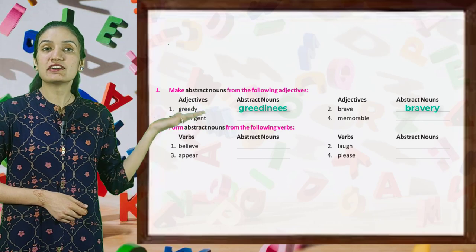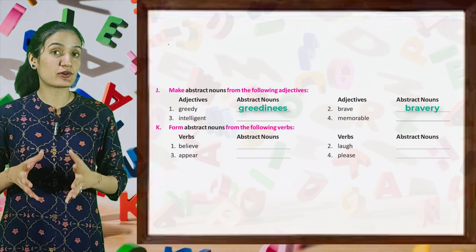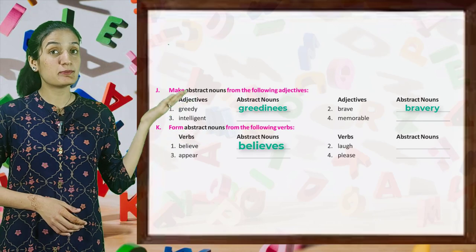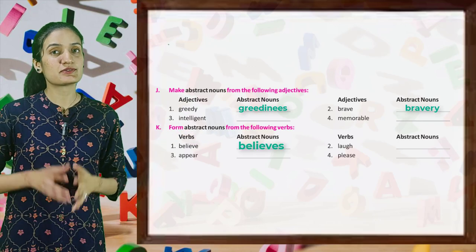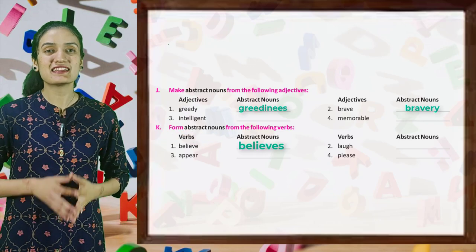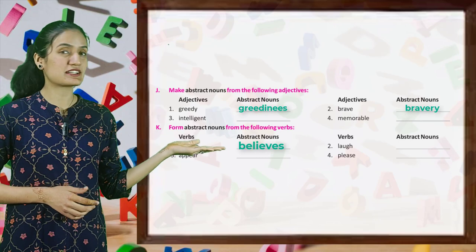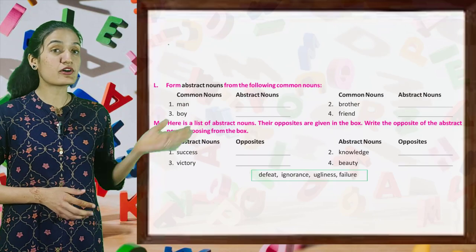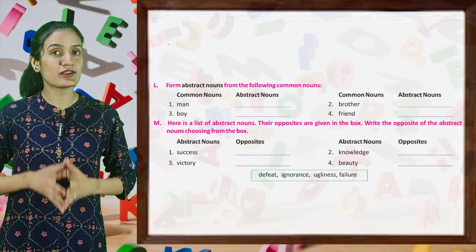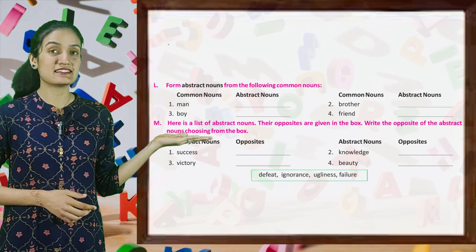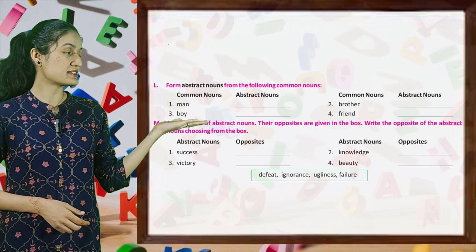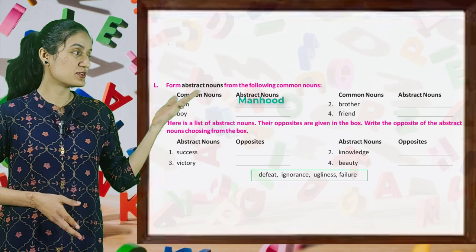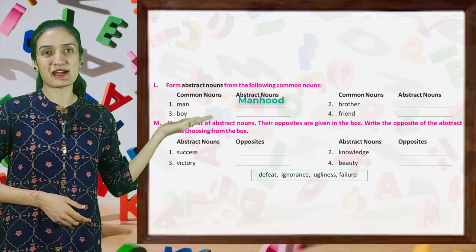Next, form abstract nouns from the following verbs. The example given is believe → belief. In the same way, you have to form abstract nouns from the verbs. Next, form abstract nouns from the following common nouns. The first example is man → manhood. In the same way, do the rest by your own.